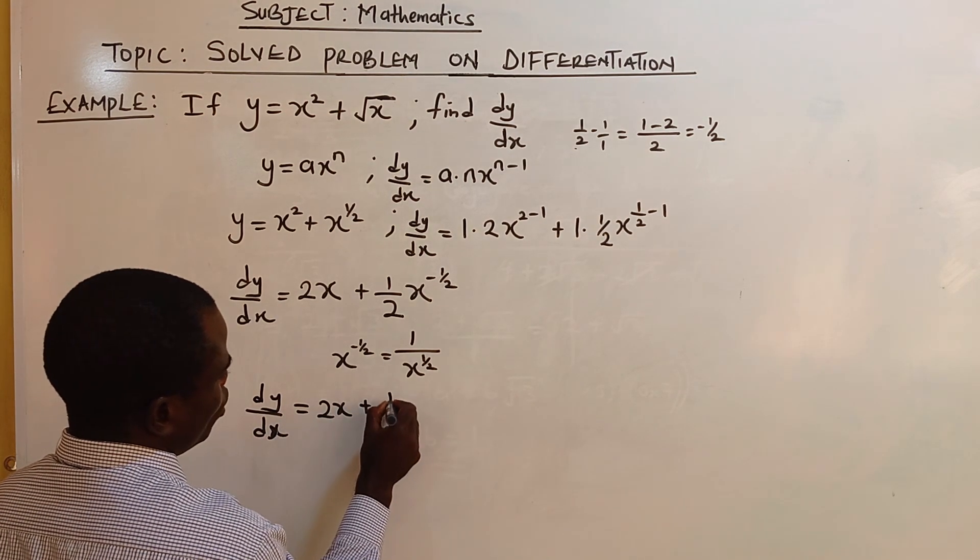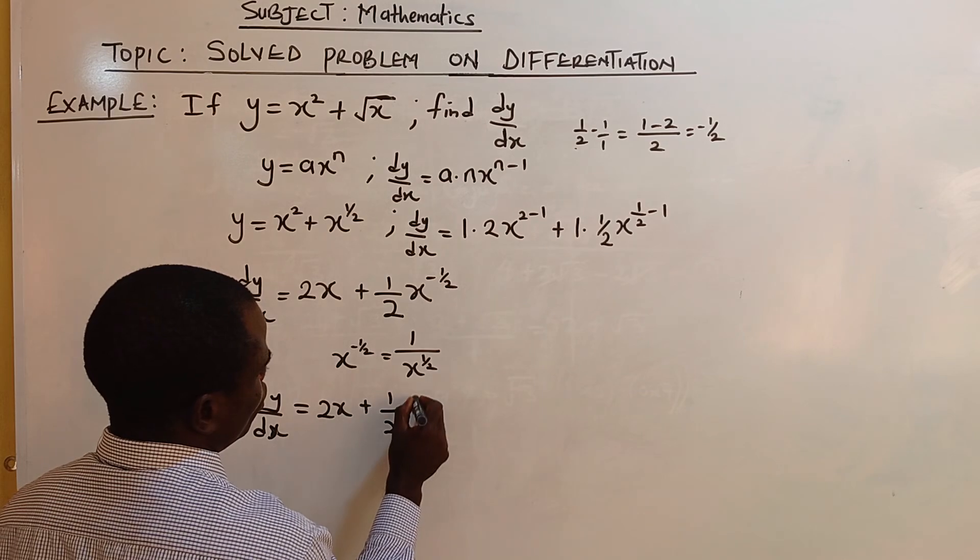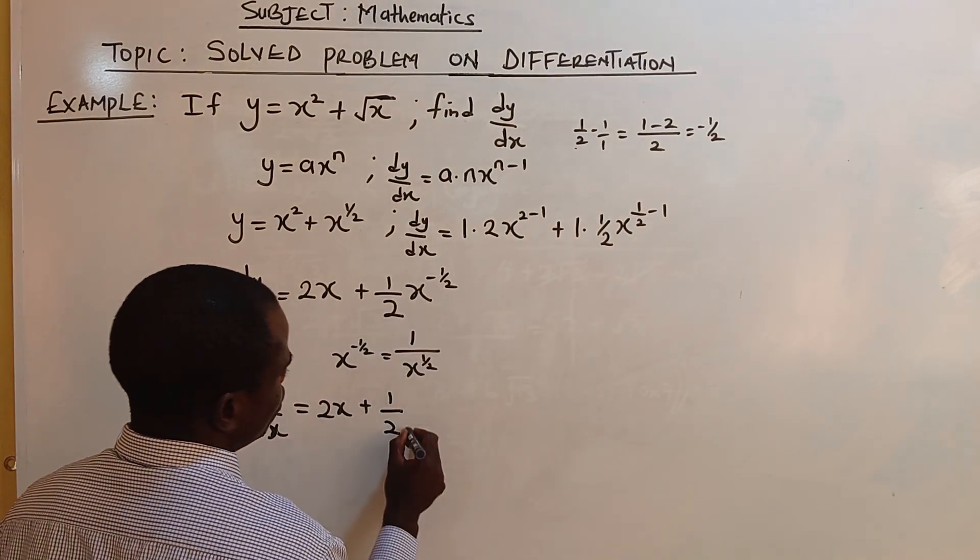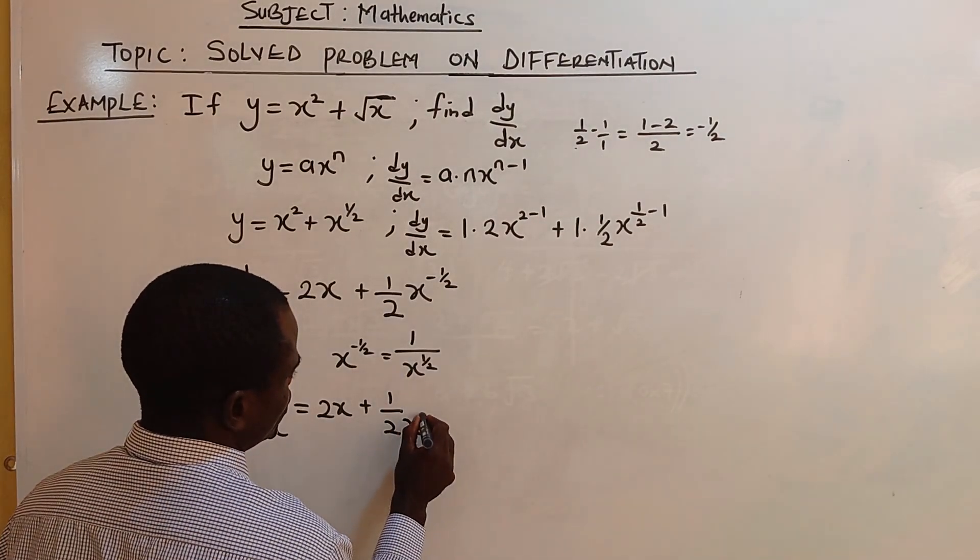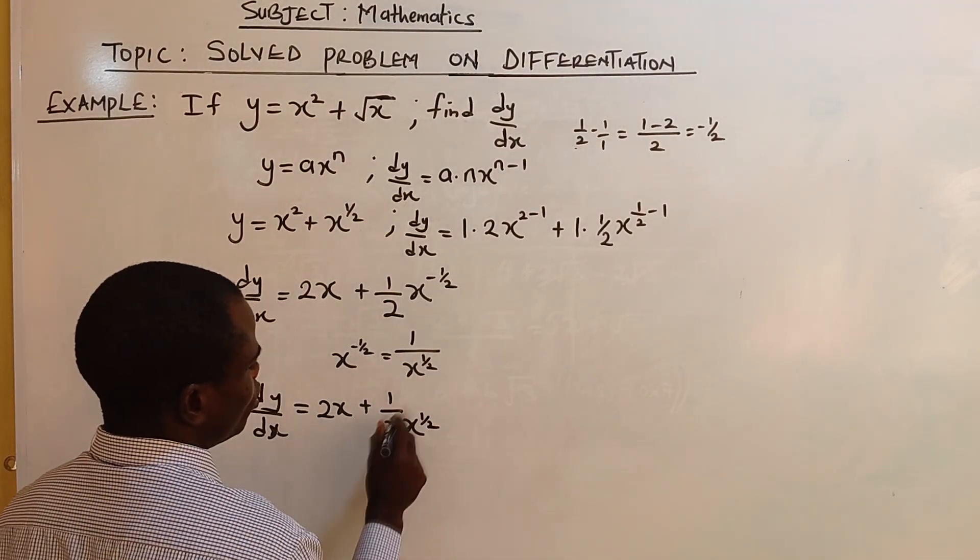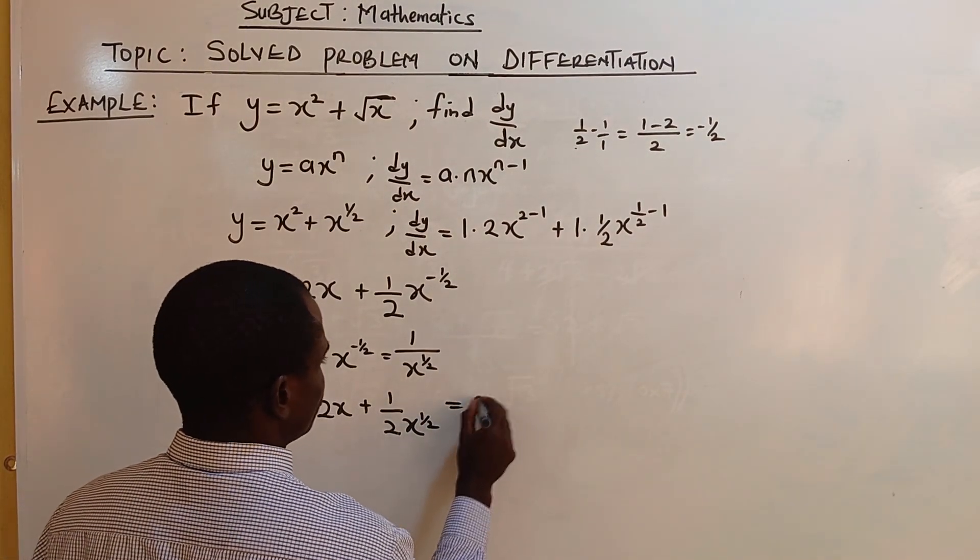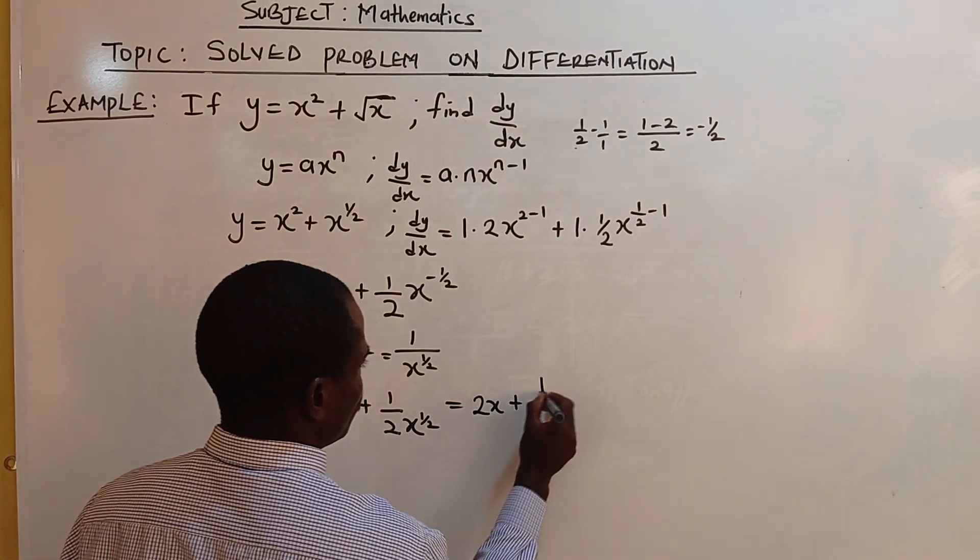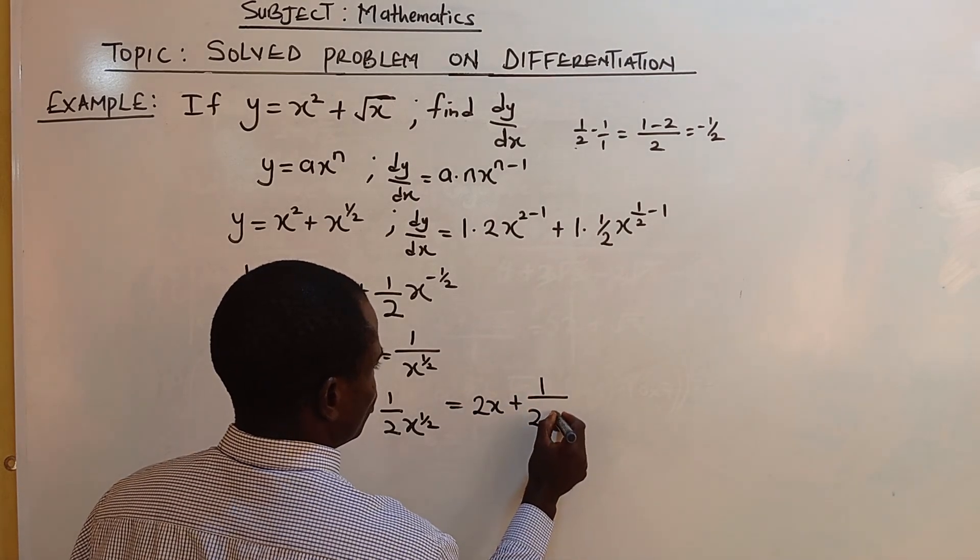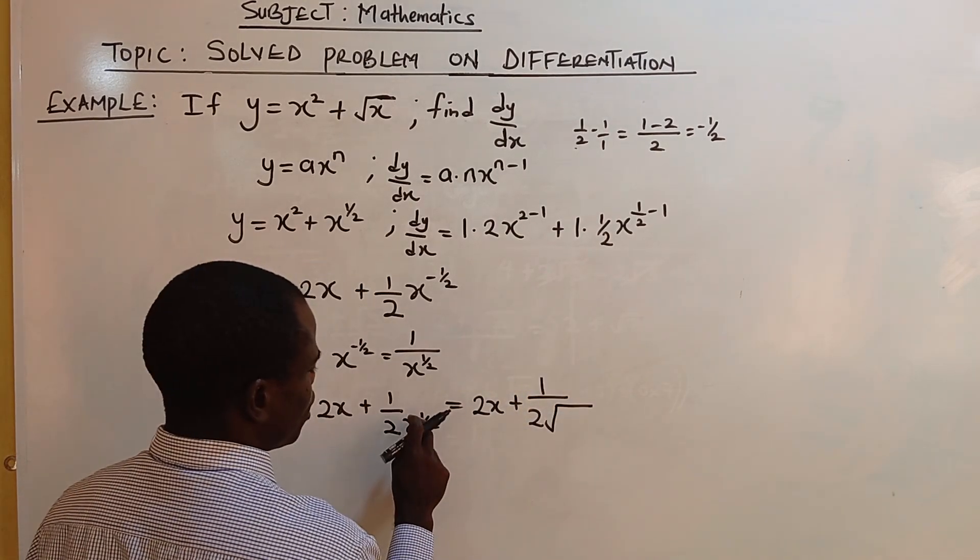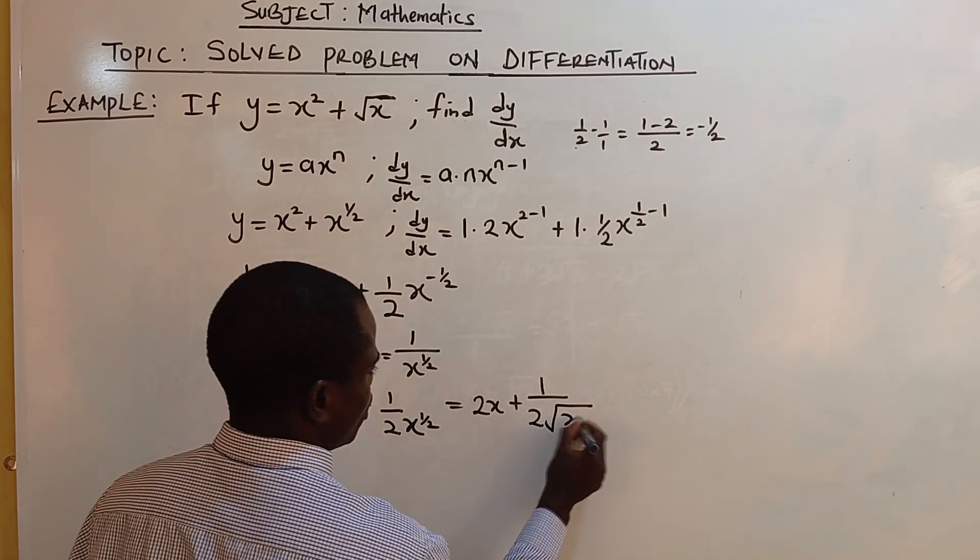dy/dx equals 2x plus one over two. As x will now go down, x to the half, this one is common to x and two. So 2x plus one over two square root x, because only the x is having the half as square root of x.